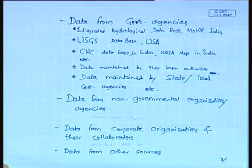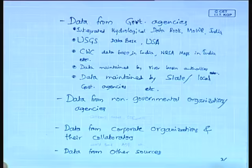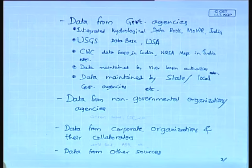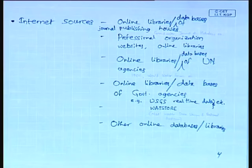Next is the data from other sources. This could be a simple school textbook, a TV program, a popular science program, a newspaper article, or even a popular science fiction book. These also present a large amount of data pertaining to ground water and constitute some of the additional data sources available.